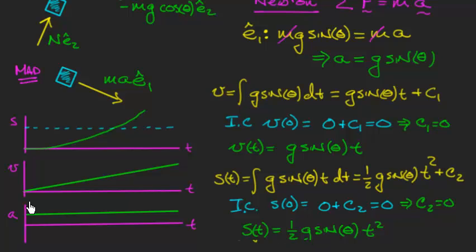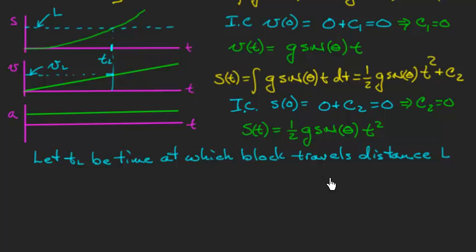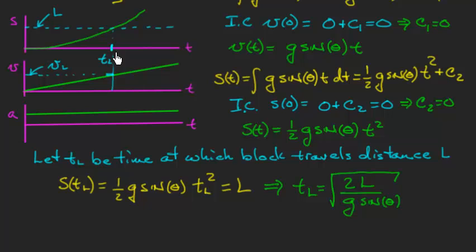Alright, now what am I doing again? I'm trying to find the speed of the block after it travels the distance L. So here's my position, and if I mark down where L is, let's say this dashed line is where s equals L, what I can do is I can find that time that it reaches that distance L. I'll call that tL. And if I take that tL and put it into my expression for v, this will give me that speed at that point L. So let's go ahead and do that symbolically. Again, I'm going to have to make some more room for myself. So I'll let tL be the time at which the block travels that distance L. So if I take s, evaluate it at tL, what do I get? It's 1 half g sine theta times tL squared, and this has to equal L.